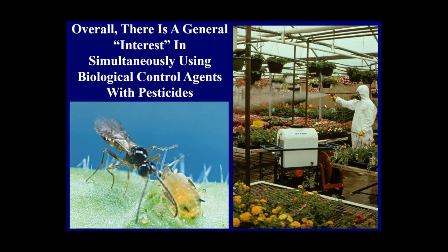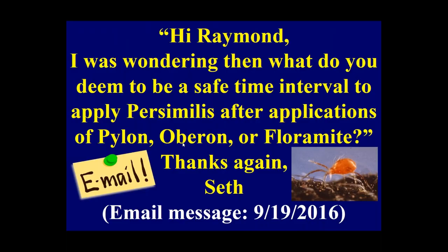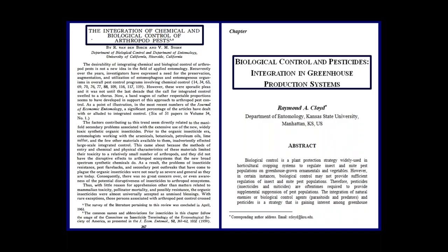There is a general interest in simultaneously using pesticides in conjunction with natural enemies. For example, I received an email in 2016 — one of 400 to 500 per year — asking: 'What is the safe time interval to apply Phytoseiulus persimilis, the predatory mite used against two-spotted spider mite, after applications of Pylon, Oberon, or Floramite?' These are typical inquiries regarding integrating biological control agents with pesticides.